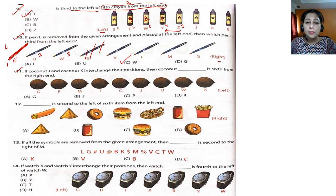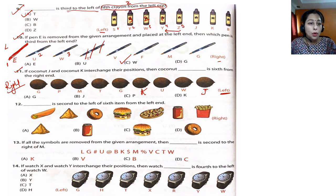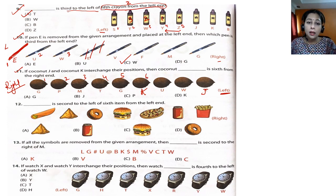Question 11: if coconut J and K are interchanged — K becomes J and J becomes K — then which coconut is sixth from the right end? This is your left, so this is your right. Sixth from the right: one, two, three, four, five, six — the answer is K, which is option D.